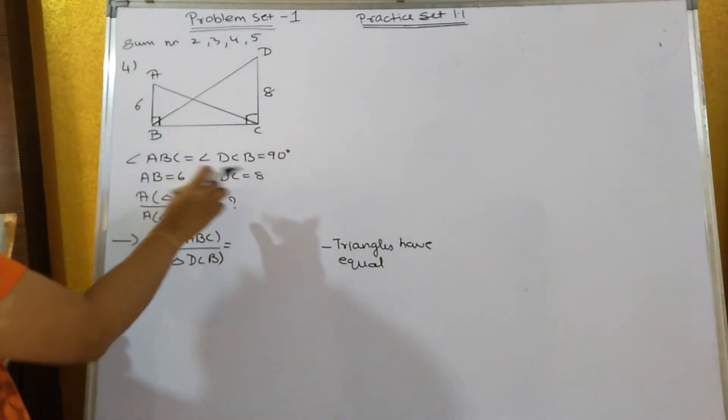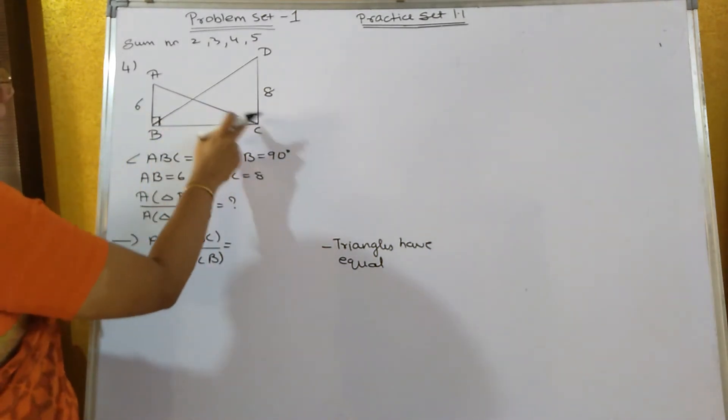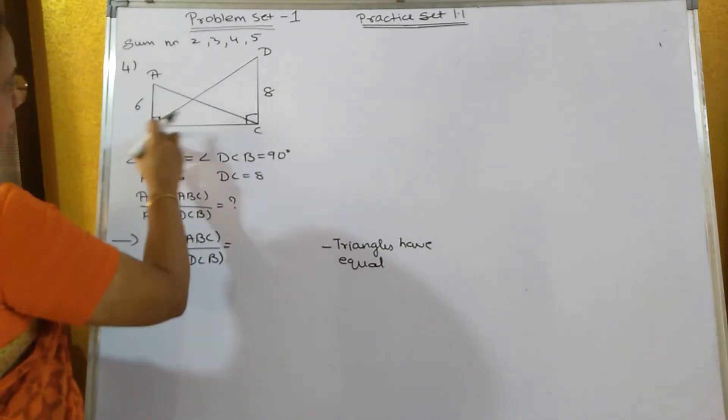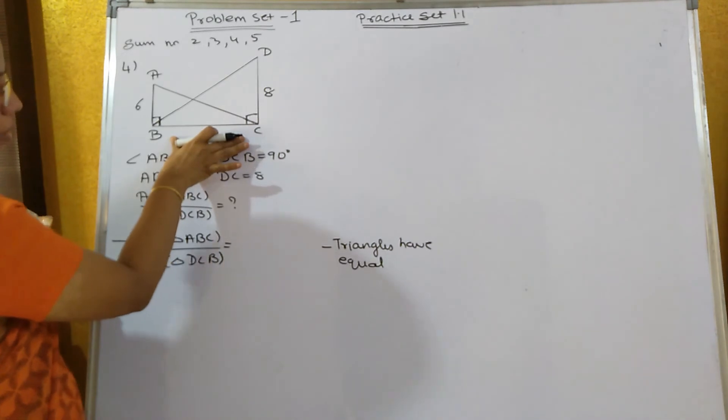Now find out the ratio. If you see triangle ABC and DCB, you'll notice they have the same base BC. Two triangles have equal base.